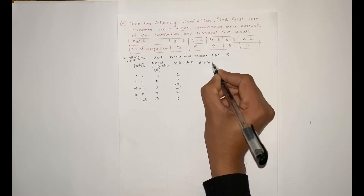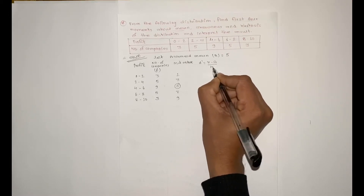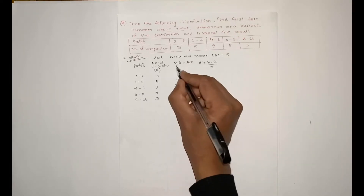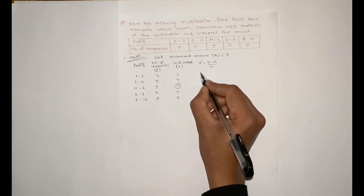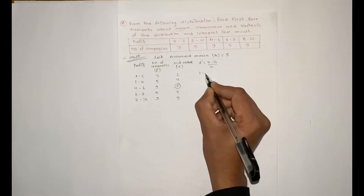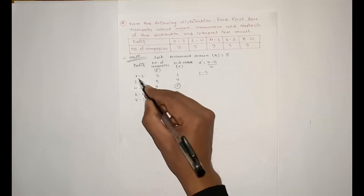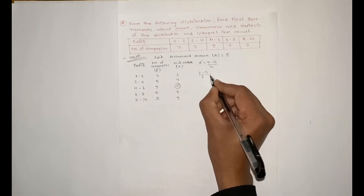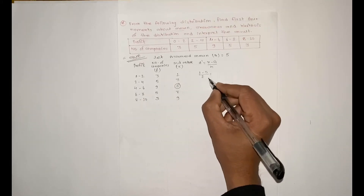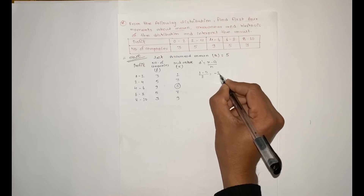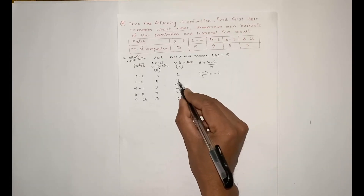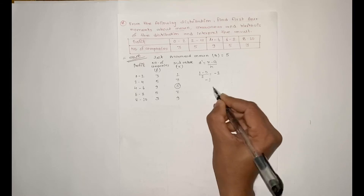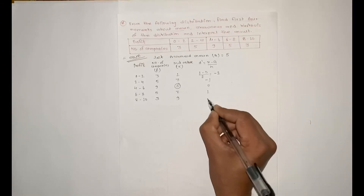Now we calculate d-dash, which is defined as (x - a) / h, where x is our mid value and a is the assumed mean of 5, divided by h, the height of the interval. The resulting d-dash values are: minus 2, minus 1, 0, 1, 2.